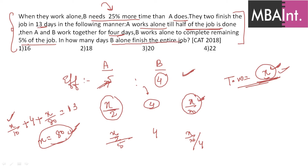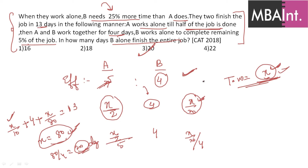But x = 80 is the total work, not the final answer. They ask how many days B alone would take to finish the entire job. B's efficiency = 4, so days = 80 ÷ 4 = 20 days. That's the answer — 20 days for B alone.